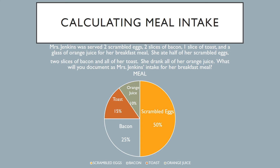If you look at the pie chart below the question, her scrambled eggs account for 50% of her meal. It doesn't matter if she had two scrambled eggs, three scrambled eggs, or five scrambled eggs — what matters is that that portion of food accounts for 50% of her meal. Her bacon accounts for 25% of the entire meal, toast 15%, and orange juice 10%. If you add all the percentages in this pie chart, it adds up to 100%.